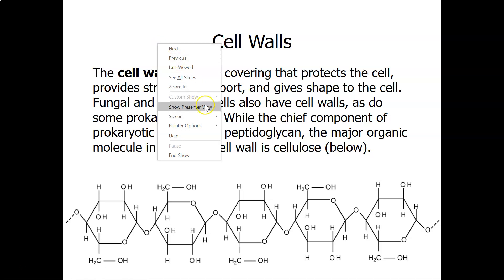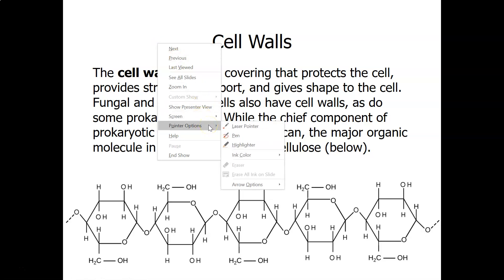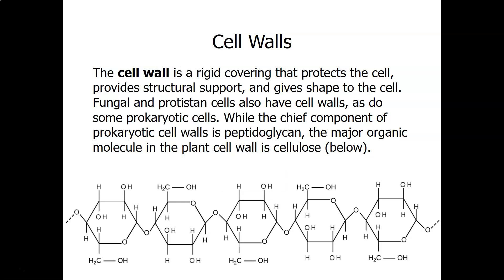Animal cells do not have cell walls, but bacterial cells — prokaryotic cells — do have cell walls, and fungal cells have cell walls. A group of organisms called protista have cell walls, including algae. So prokaryotic cells have cell walls, which includes our bacteria and archaea, and plant cells have cell walls.